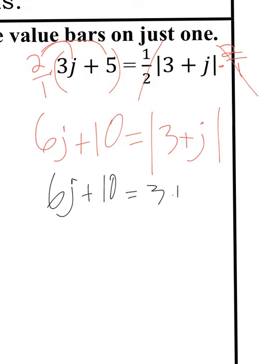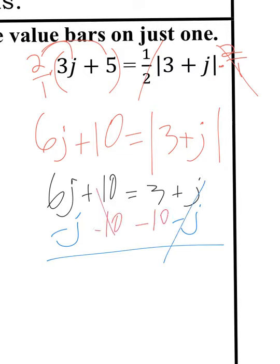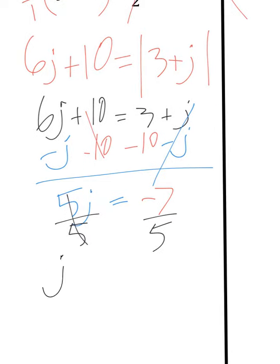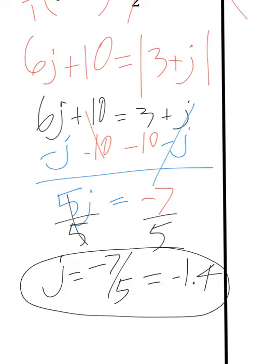Now drop the absolute value bars and solve: 6j plus 10 equals 3 plus j. Get the j's on one side by subtracting j. That cancels one thing on the right, so subtract 10 on the left. I get 5j equals 3 minus 10, which is negative 7. Dividing by 5 gives j equals negative 7 over 5, which as a decimal is negative 1.4.